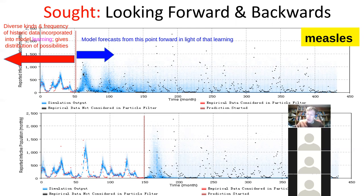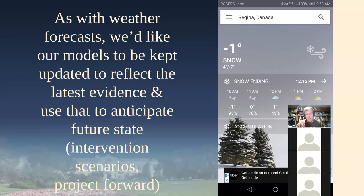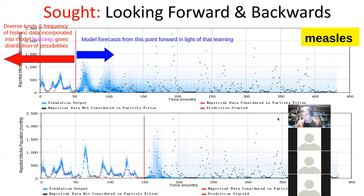The black data points are ones the model hasn't taken into account; the red ones are ones it did take into account. We show the black ones just to compare model predictions — knowing only data to this point — against empirical data. In a whispered way, it's telling us there's probably a big outbreak coming over the next year or two, and probably a second one further on. It's increasingly uncertain the further out we go, just like a weather app two or four weeks out.